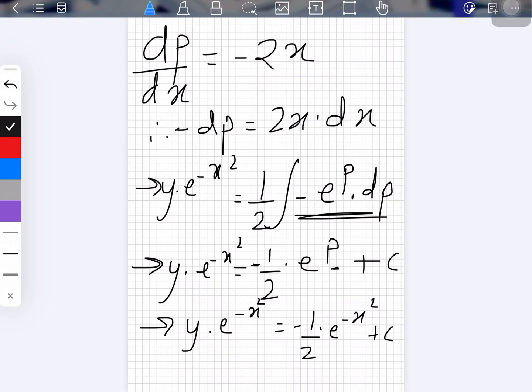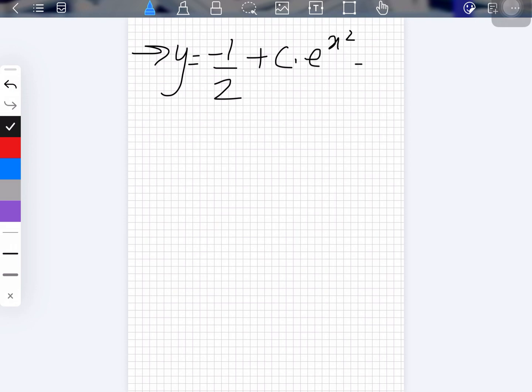Now what you can do is you can send this e^(-x²) to the right-hand side, I mean divide it. So that way what you would be getting is y = -1/2 + C. Yeah, I think this is it.